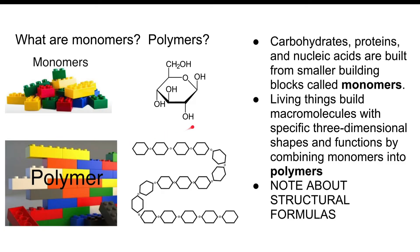Here's a note about structural formulas. If you see something like this, you might wonder what's going on at these angles. Every unspecified angle vertex has a carbon atom. That's why glucose is C6H12O6 — because there are carbons at each vertex. Carbon is so central that it's just understood.